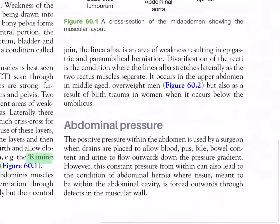Regarding abdominal pressure: the positive pressure within the abdomen is used by surgeons when drains are placed to allow blood, pus, bile, bowel content, and urine to flow outwards down the pressure gradient. However, this constant pressure from within can also lead to abdominal hernia, where tissue meant to be within the abdominal cavity is forced outwards through defects in the muscular wall.